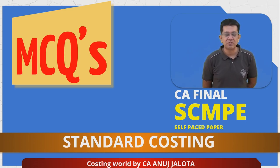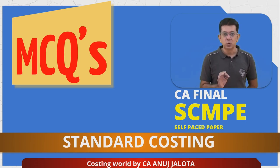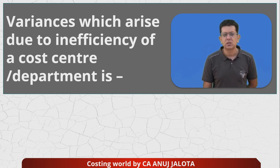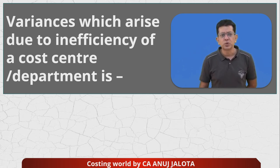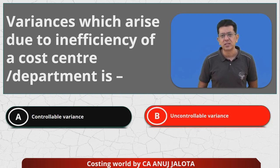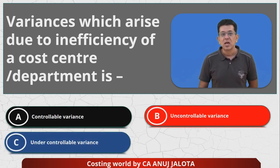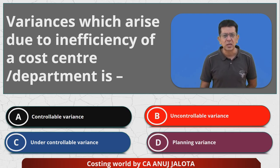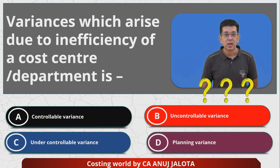Welcome guys to MCQs of CA Final SCMP self-paced paper — this is standard costing. These MCQs are to be solved if your chapter is completely over. I'm trying to explain the logic in depth of each and every variance. The question is: variances which arise due to inefficiency of the cost center — cost center means department or responsibility center who is responsible to control the cost — what are they? Options: A) controllable variances, B) uncontrollable variances, C) under controllable (no such term), D) planning variances. Try commenting the answer before I explain.